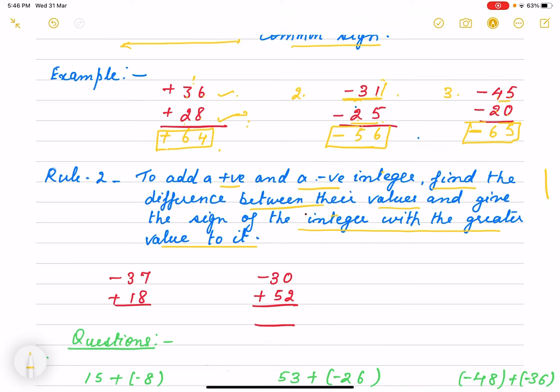All of you know which one is greater. So suppose here -37 and +18. We subtract. 7 minus 8 needs borrowing, so it's 17 minus 8 equals 9. 2 minus 1 is 1. But which one is greater, 37 or 18? 37 is greater, and what is its sign? Negative. So the answer is negative.